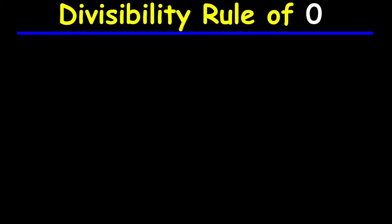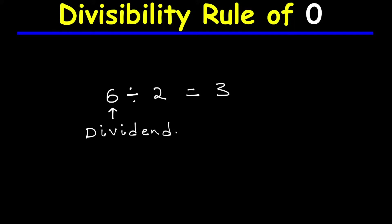Hello everyone. In this video we are going to discuss the divisibility rule of zero. Let's start with simple concepts. We know that six divided by two is equal to three. In division, the number being divided is called the dividend — here six is the dividend. The number doing the dividing is called the divisor — here two is the divisor. The result of the division is called the quotient — here three is the quotient.